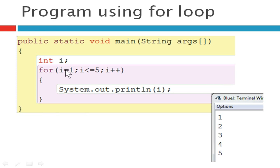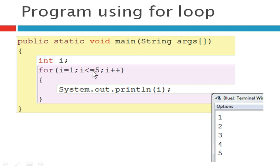Now we will see an example to print numbers from 1 to 5. You have to declare a variable and initialize it with the starting value — i equals 1. You are going to check the condition: if the i value reaches 5, it will stop the loop; until then, it keeps executing. You should have an increment statement to increase the i value every time so that it reaches the final value. Inside the body of the loop, you can see the output statement to print the i value.